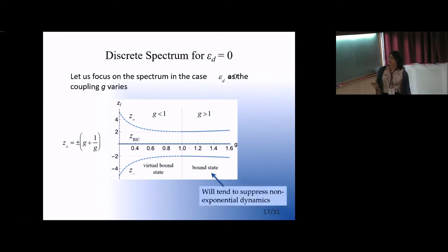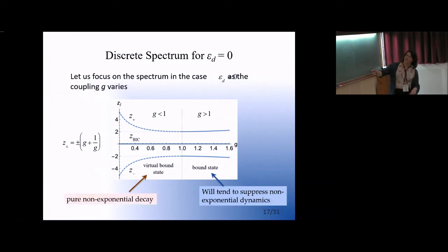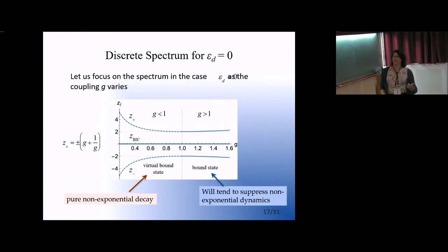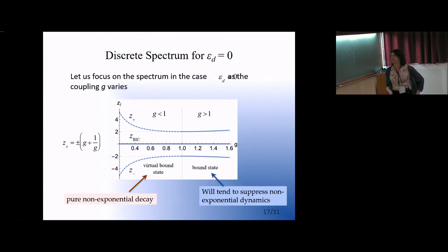For g > 1, the presence of these bound states tends to suppress the non-exponential dynamics and make them difficult to see. However, for g < 1, the only things present in the spectrum are the bound state in continuum and two virtual bound states — no additional bound states, no additional resonances — meaning the evolution contains only pure non-exponential decay. This gives a good opportunity to study the effect. Note that the gap between these virtual states and the band edge is an important physical quantity; that gap vanishes at the localization transition between the two regions.